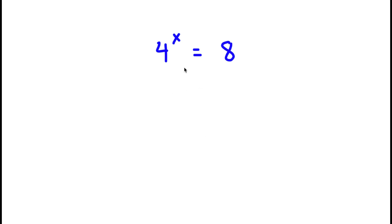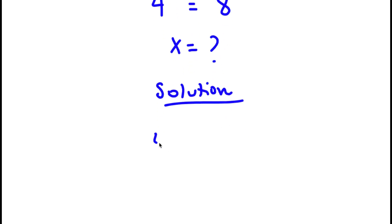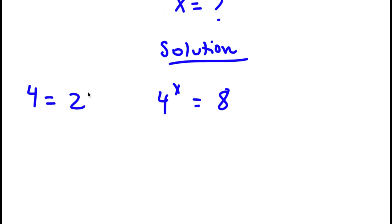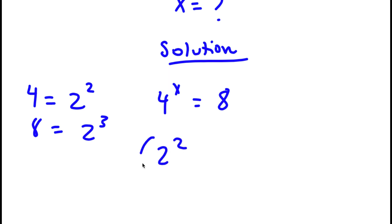In this problem, I have 4 to the power of x is equal to 8. I want to find the value of x. First start with 4 to the power of x is equal to 8. And 4 is the same thing as 2 to the power of 2, and 8 is the same thing as 2 to the power of 3. So now if I replace 4 with 2 to the power of 2, and replace 8 with 2 to the power of 3, I get 2 to the power of 2 to the power of x is equal to 2 to the power of 3.